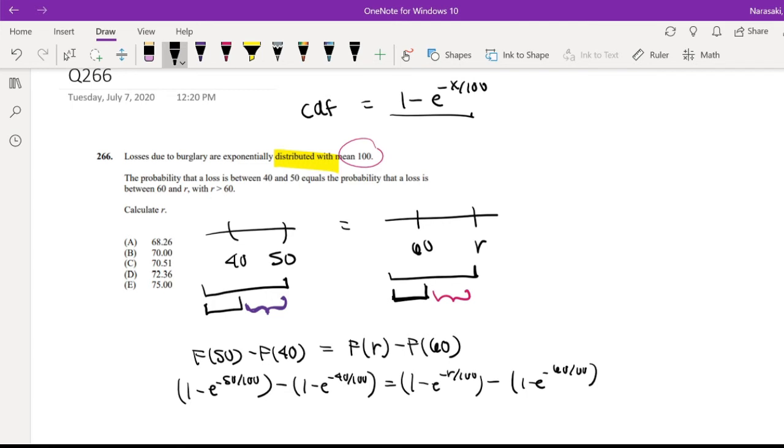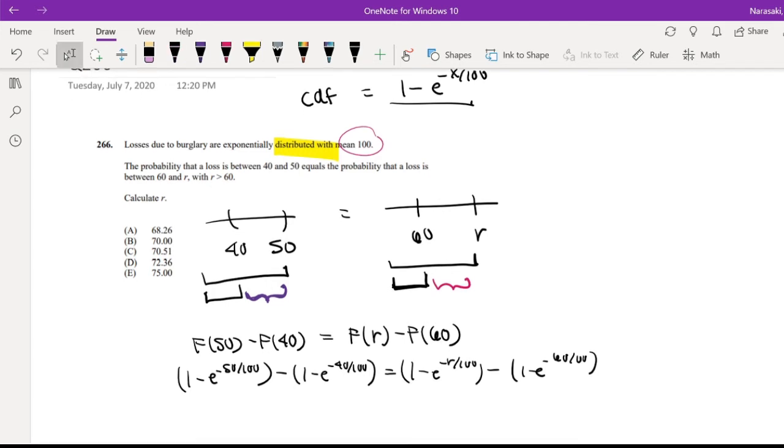Okay, so then now I'm going to distribute that negative sign. So 1 minus 1 is 0. And then the first part stays the same. Two negatives make a positive, right? And I'm solving for R here, this R right here.